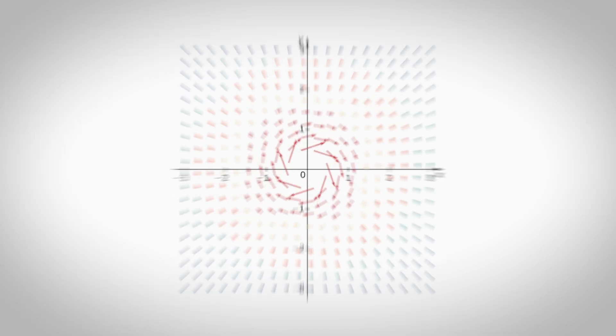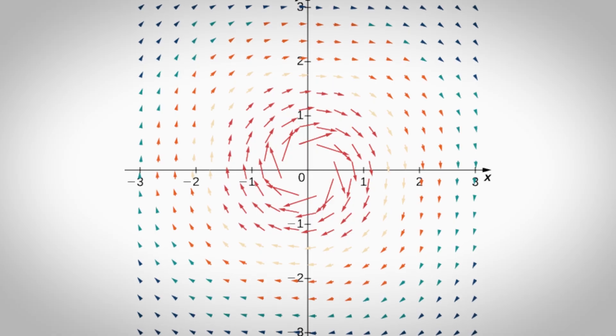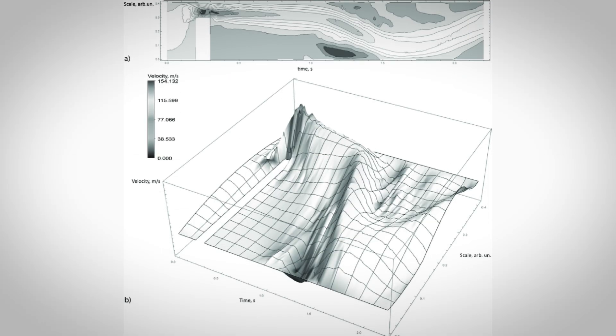Vector fields. A vector field is a function which assigns a vector to every point in space. This is useful in physics when you're dealing with fluids because you can define the velocity of a fluid as a 3D vector field.